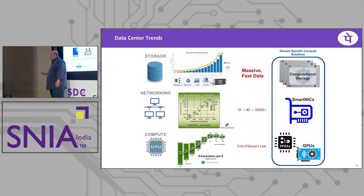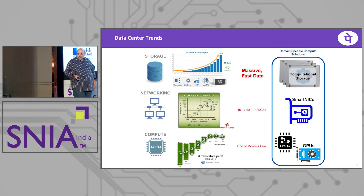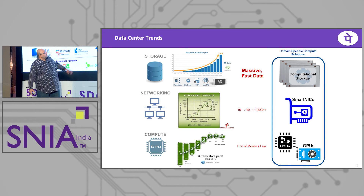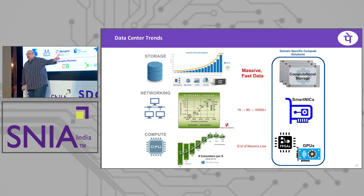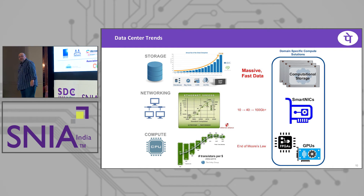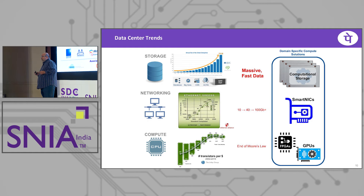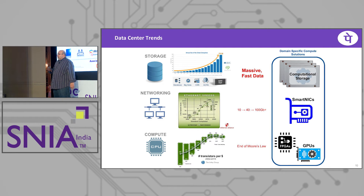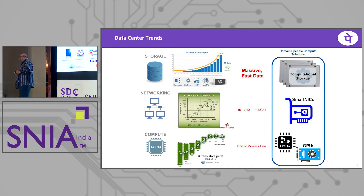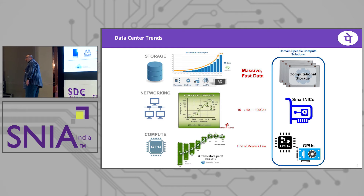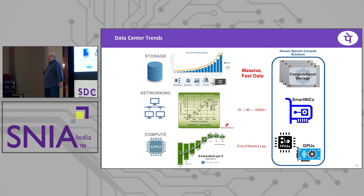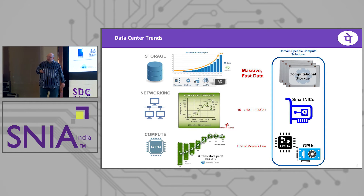What does that have to do with storage? By 2025, we're looking at 175 zettabytes of data. Even NVMe isn't fast enough, because the CPU cannot crunch through all of it. You have to find a way to push that processing out to the storage device itself, where it will perform that one specific operation a million times and free up the CPU so it can concentrate on something else. That's what computational storage is.